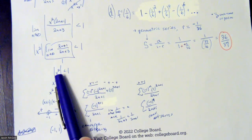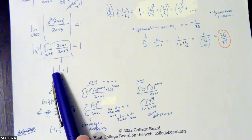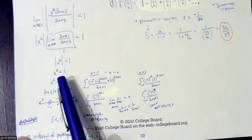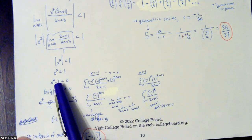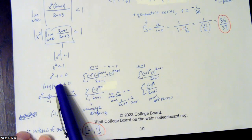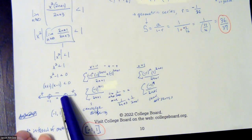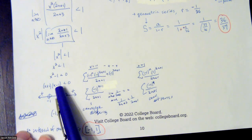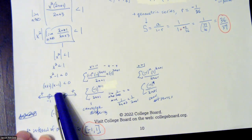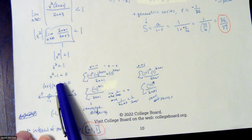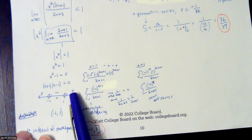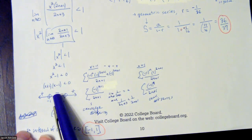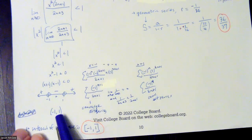So you get the absolute value of x squared less than 1. The nice thing is x squared is always positive, so you don't need those absolute value bars — it's just x squared less than 1. This is a non-linear inequality, so get everything on one side with zero on the right, factor it, and find the zeros: negative one and positive one. Using zero as a test point: zero plus one is positive, zero minus one is negative, positive times negative is negative. The signs alternate, so you're looking for where it's less than zero — between negative one and positive one.